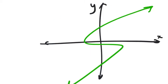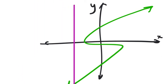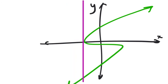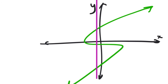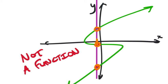Now change the line to an S-curve and apply the vertical line test. At first it only crosses once, but when you move the vertical line to a certain position, it goes through the curve in three different places. For that one x value, there are three possible outputs — you don't know which y you'll get. That's why this is not a function.